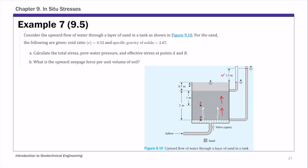For Part A, we first calculate total stress, pore pressure, and effective stress. To do this, we need the saturated unit weight of the soil sample. For this example, we are not given gamma saturated directly. Instead, we are given the void ratio e and the specific gravity Gs. To calculate the saturated unit weight, I'm going to use the phase diagram.